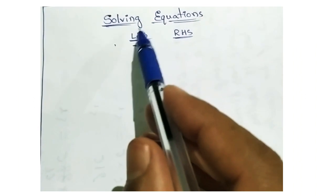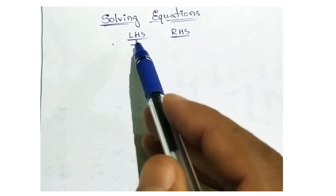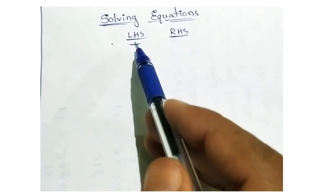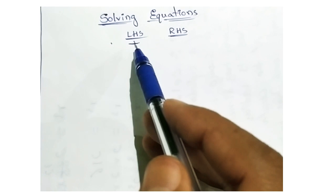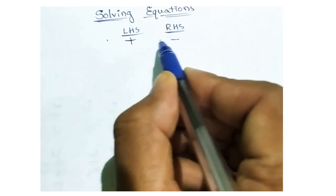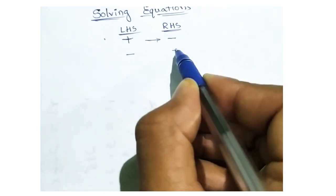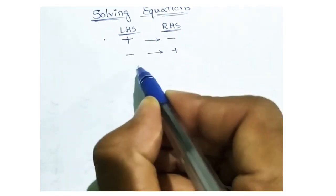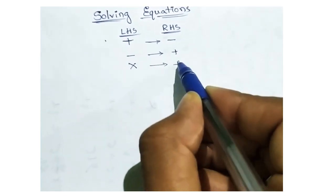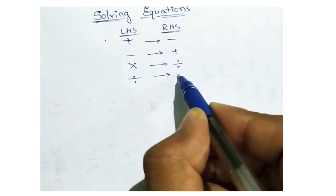Next concept about solving equations. Before knowing this, first you should know the sign values. If you take a plus from the left side to the right side, that plus becomes minus. Similarly, minus becomes plus, and multiplication becomes division and division becomes multiplication.